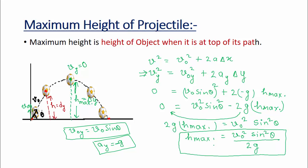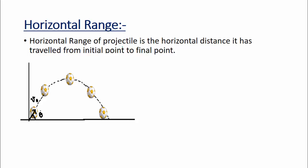You can use this equation directly or derive it using the kinematic equation — both approaches work. Next is horizontal range. The horizontal range of a projectile is the horizontal distance traveled from the initial point to the final point, also called the maximum horizontal distance or simply the range.